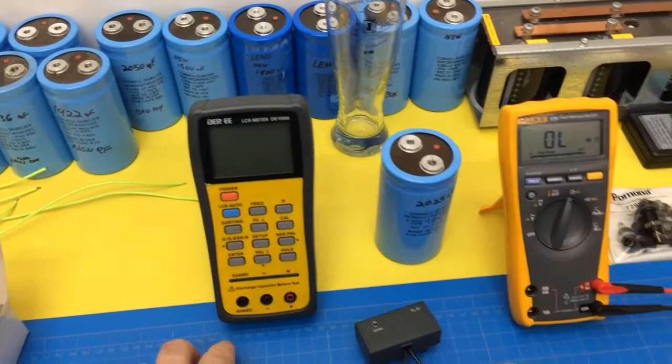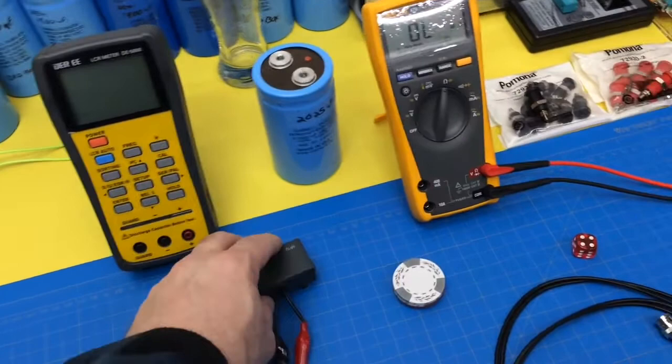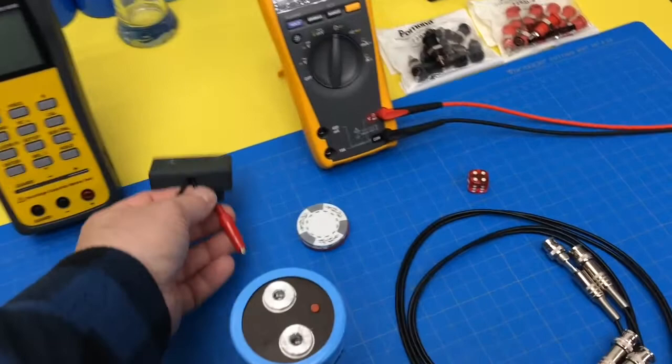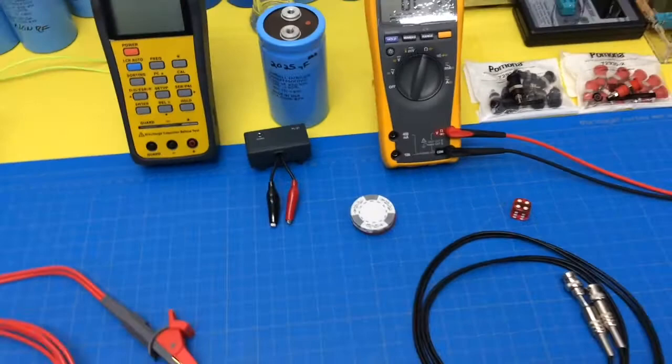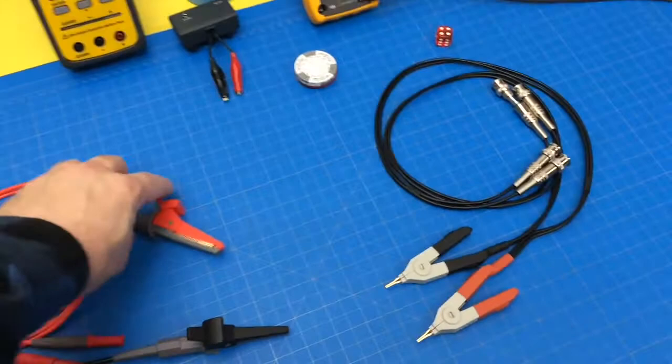Okay, so we bought this new LCR meter and it comes with four-wire Kelvin clips, but they're a little bit short and they don't work well for these capacitors right here and a few other components. I just like them a little bit longer, so what we did was we bought some inexpensive four-wire Kelvin clips on Amazon.